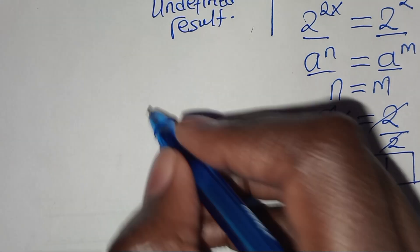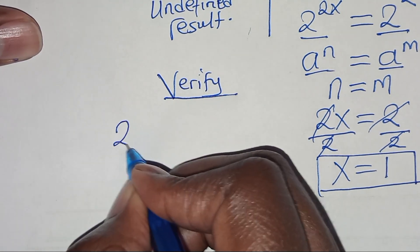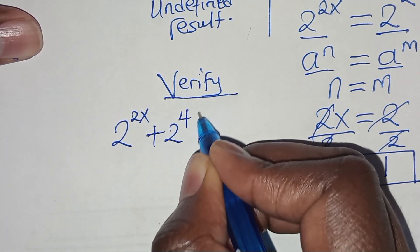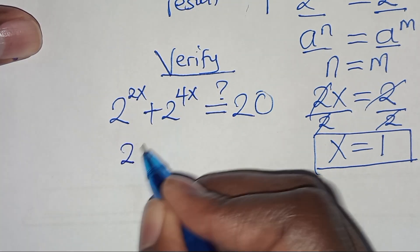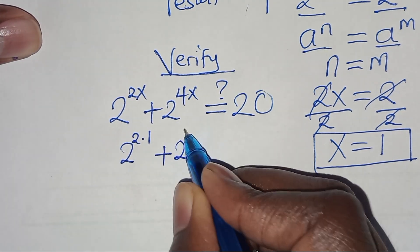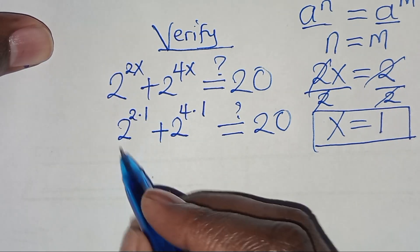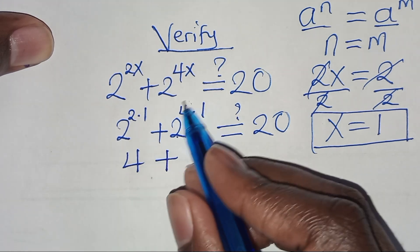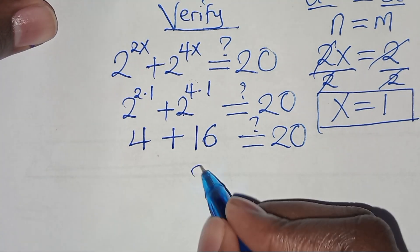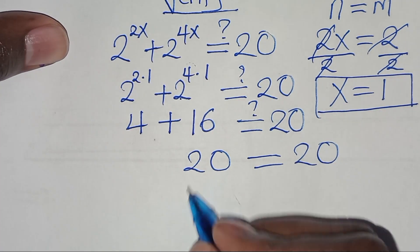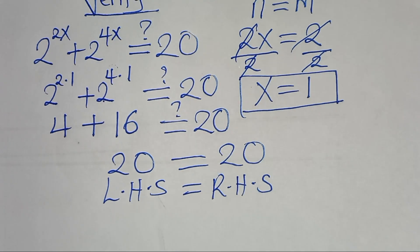The next step is to verify that this value of x satisfies the equation. Substituting x equals 1 into 2 to the power of 2x plus 2 to the power of 4x: we get 2 to the power of 2 plus 2 to the power of 4, which is 4 plus 16, this is equal to 20. The left-hand side equals the right-hand side, confirming that x equals 1 satisfies the equation.